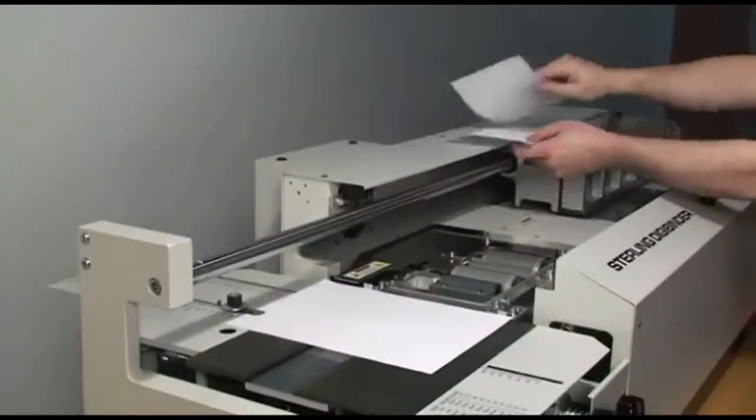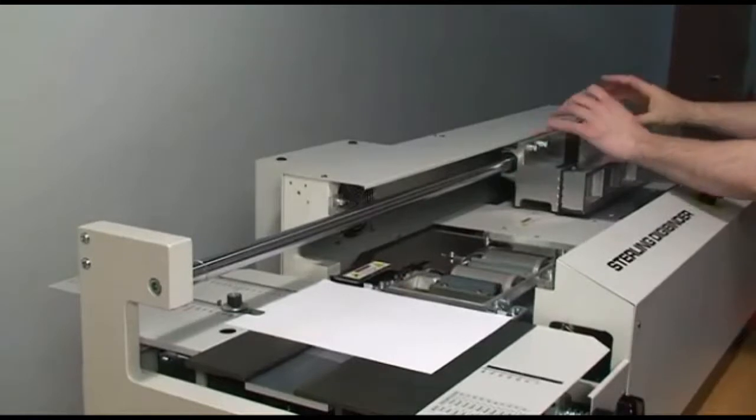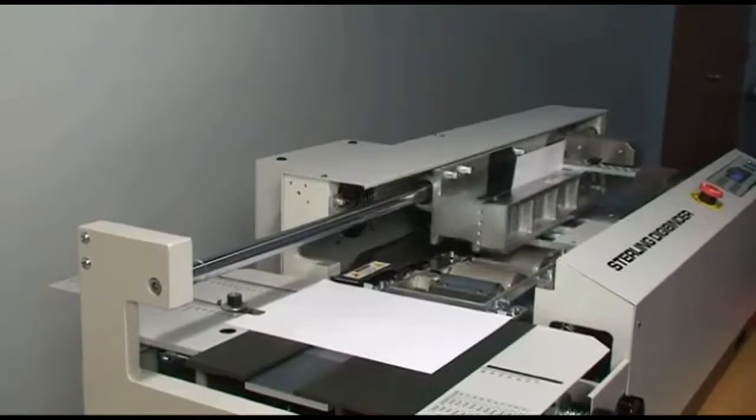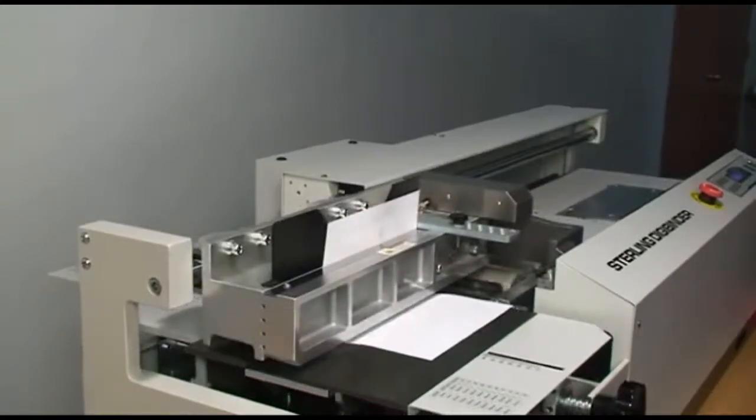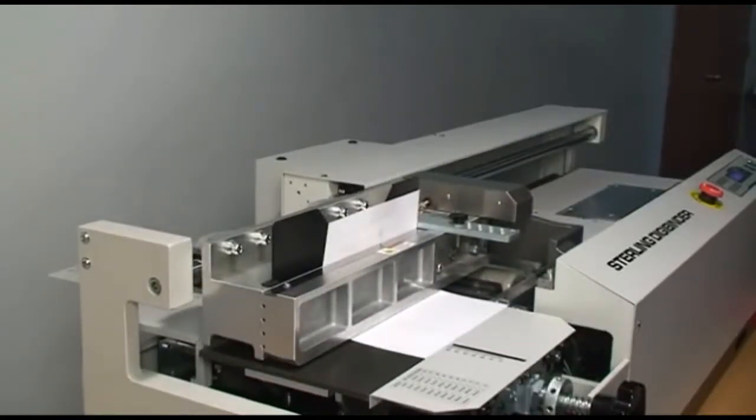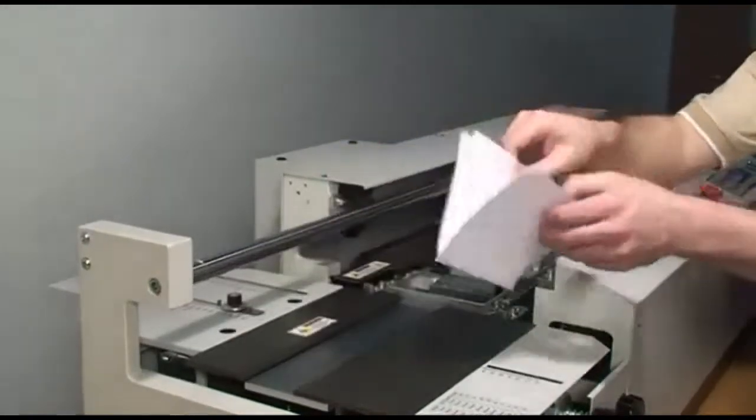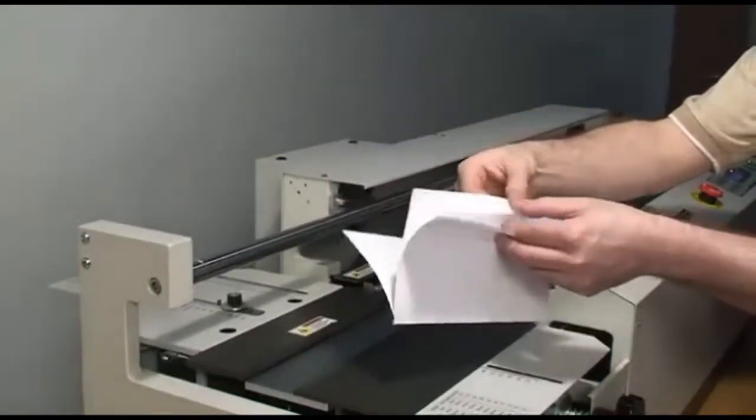The DigiBinder can also bind as little as two sheets. Here we are binding two sheets into a plain paper cover. This is a great alternative to stitching.